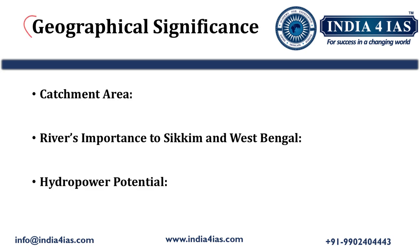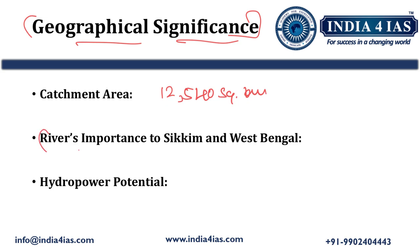Coming to the geographical significance of the Teesta River: it drains an area of around 12,540 square kilometers, with the majority of the basin lying inside India. It is a vital source for irrigation of agricultural lands in Sikkim and West Bengal. It supports hydropower projects and serves as a major water source for people of Sikkim and northern Bengal. The river is known for its hydropower potential, and several hydropower plants like the Teesta Hydropower Projects are located along its course.